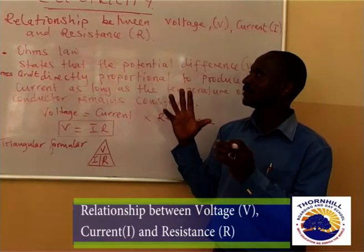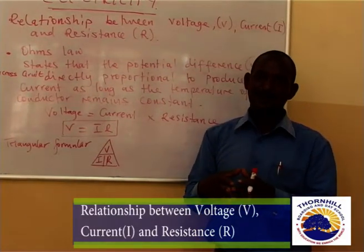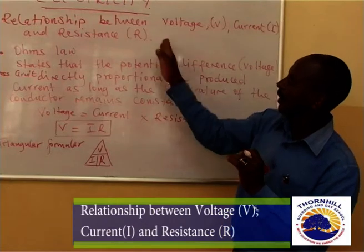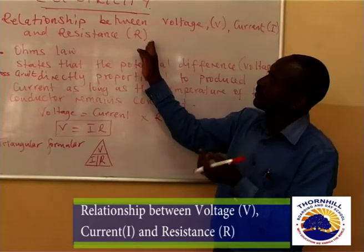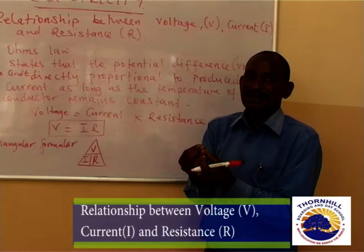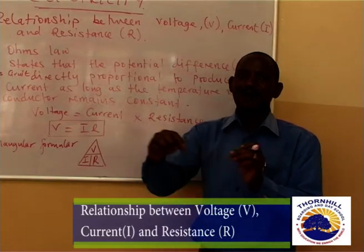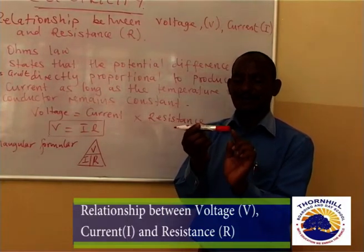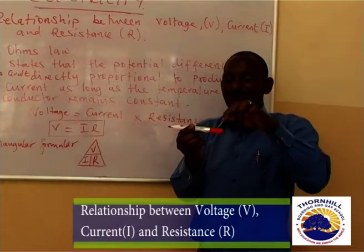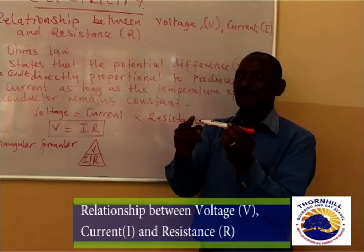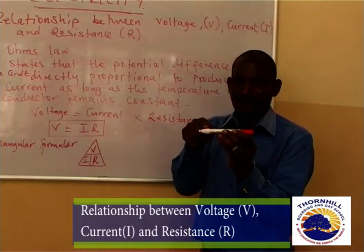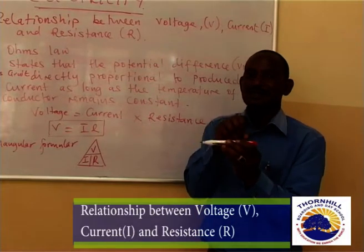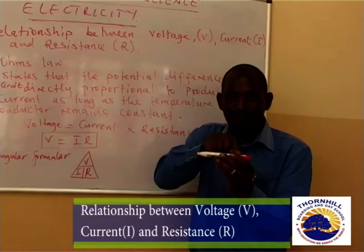Since we know the symbols, we are now going to see how those items are going to be used to allow the flow of current in a given conductor — for example, in a copper wire. If this is a copper wire, then you are going to have the flow of current from one point up to the other point. What happens in this wire?